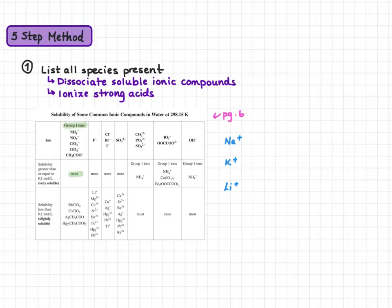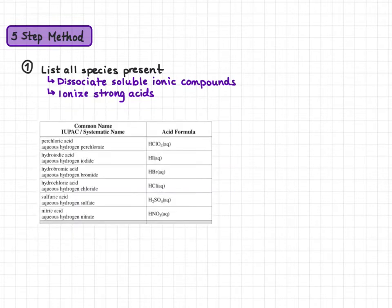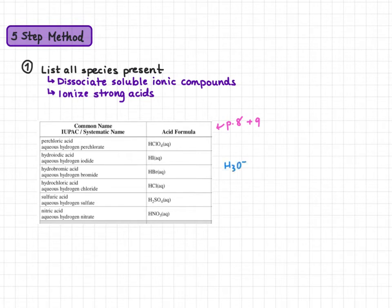We also are going to ionize strong acids. On pages eight and nine of your data booklet you will find your acid-base table. This table has your strong acids grouped at the top: perchloric acid, hydroiodic acid, hydrobromic acid, hydrochloric acid, sulfuric acid, and nitric acid. When we ionize these 100%, we will have H₃O⁺ present in our solution and whatever our anion is. For example, for perchloric acid, A⁻ would be ClO₄⁻. For sulfuric acid, it would be HSO₄⁻.